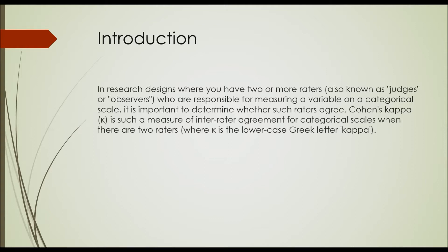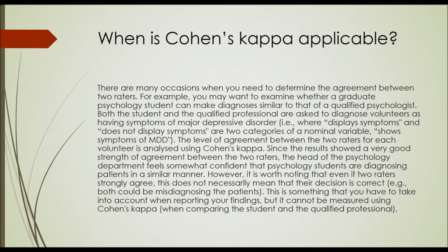K is the lowercase Greek letter Kappa. So when is Cohen's Kappa applicable? There are many occasions when you need to determine the agreement between two raters. For example, you may want to examine whether a graduate psychology student can make diagnoses similar to that of a qualified psychologist. Both the student and the qualified professional are asked to diagnose volunteers as having symptoms of major depressive disorder (MDD), where 'displays symptoms' and 'does not display symptoms' are two categories of a nominal variable.